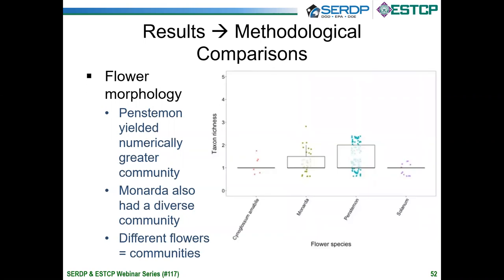We did a number of methodological comparisons. We compared different flower types, since different flowers with different morphologies may yield differential communities — and indeed that happened. Penstemon yielded numerically greater communities, while monarda also had a diverse community. A lot of factors could be at play: our solanum flowers were quite small, so bees barely hung on with very low contact and low handling time. Penstemon, on the other hand, bees would crawl in, root around, and spend a great deal of time handling the flower — likely depositing far more DNA. It becomes clear that the types of flowers can have pretty big impacts on whether you're detecting the full communities.